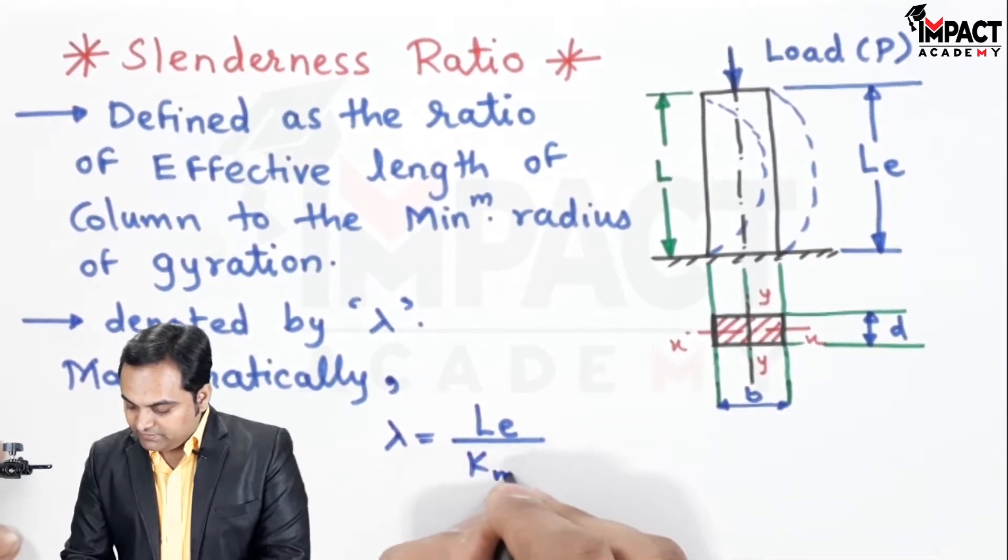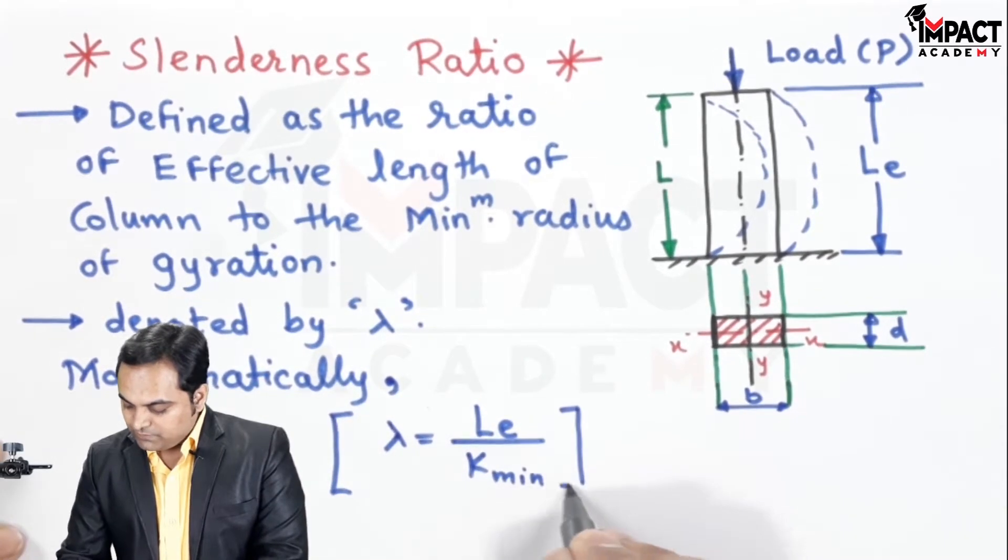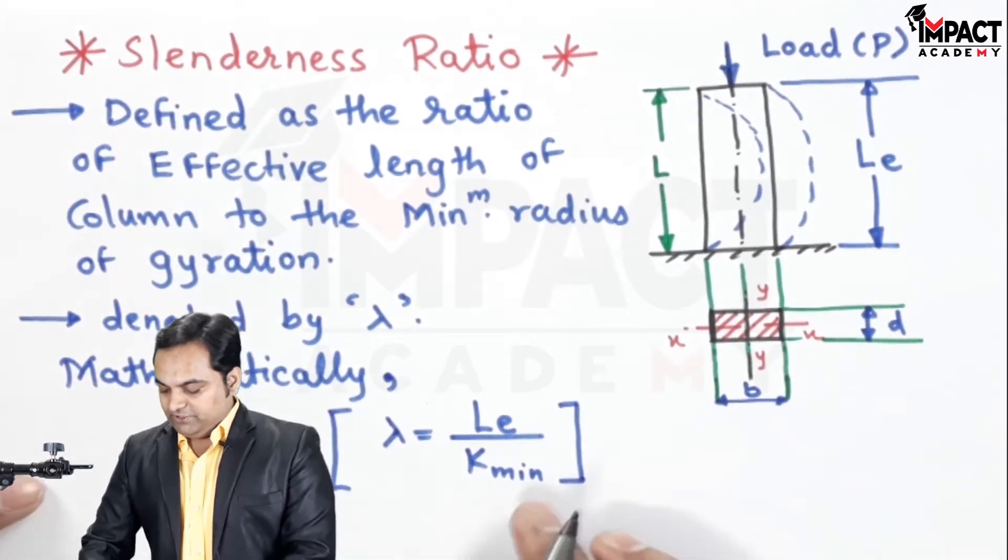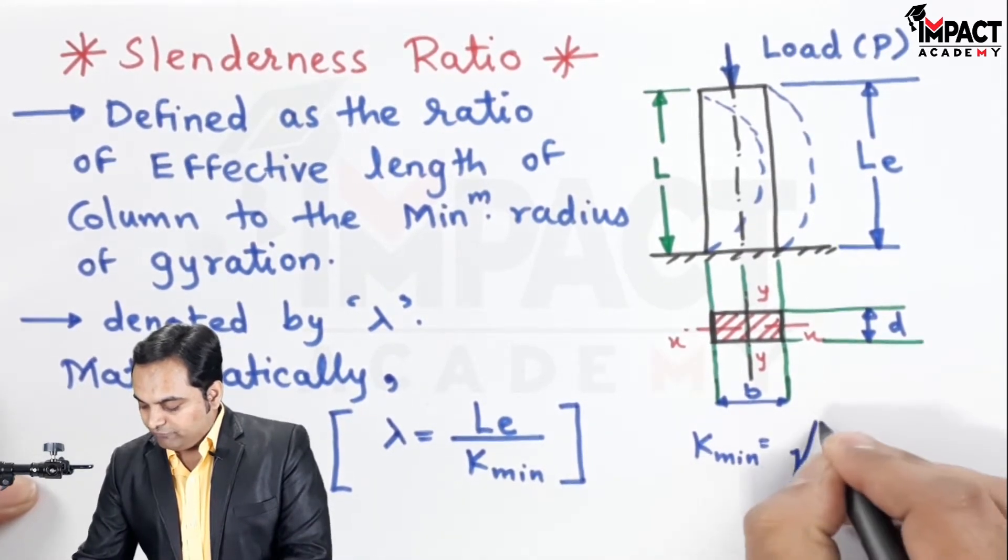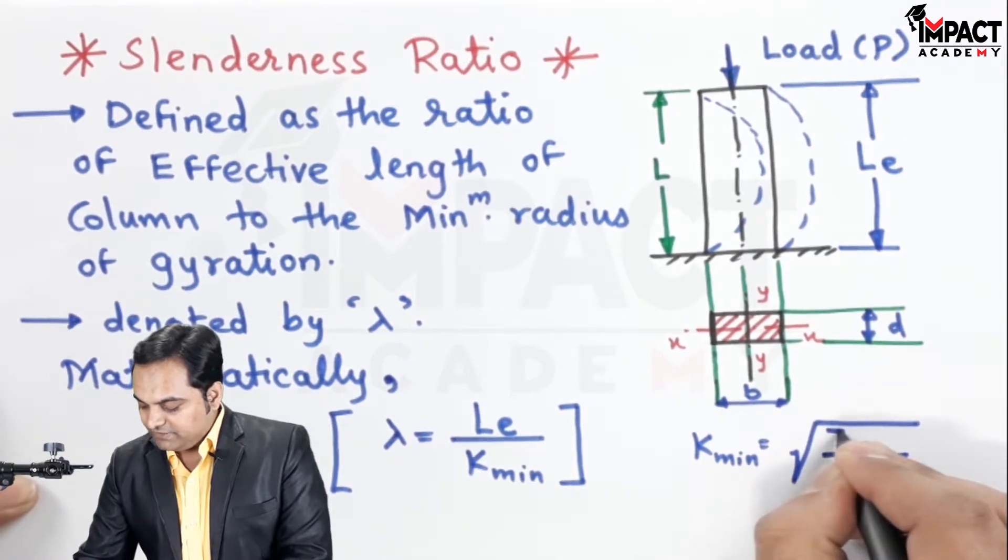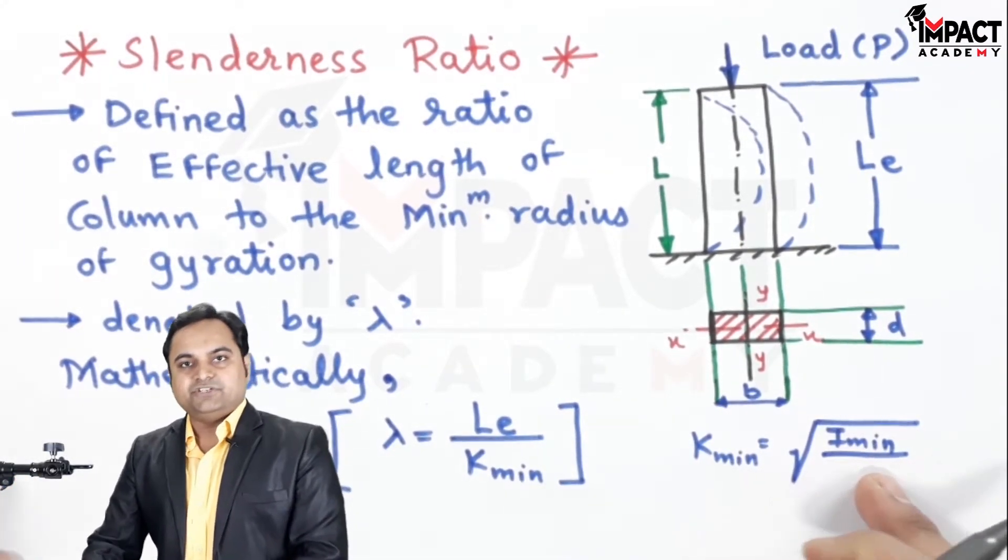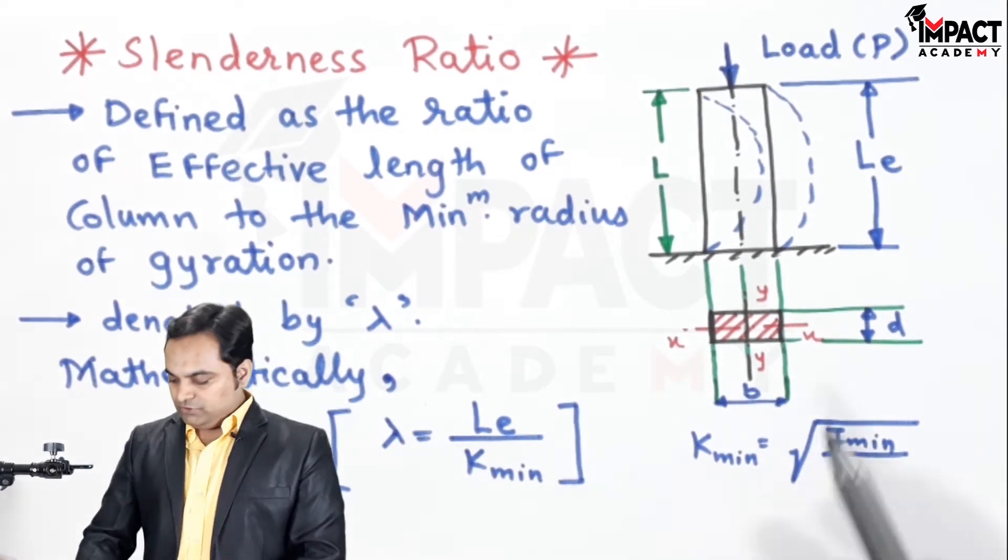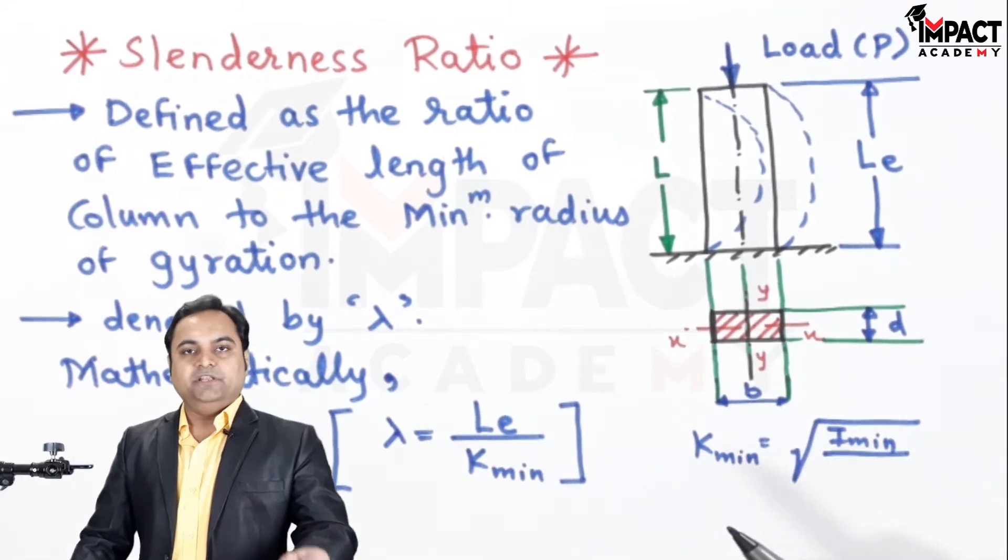This minimum radius of gyration is given by the formula: the root of I minimum, that is the minimum moment of inertia. The minimum moment of inertia is the least of the two values from IXX and IYY.